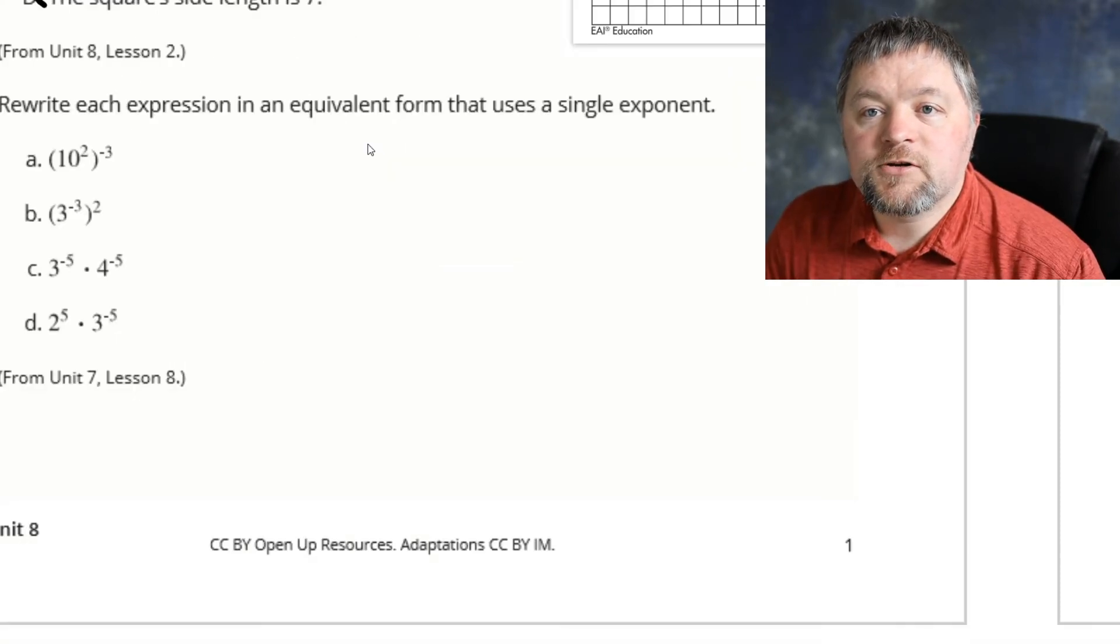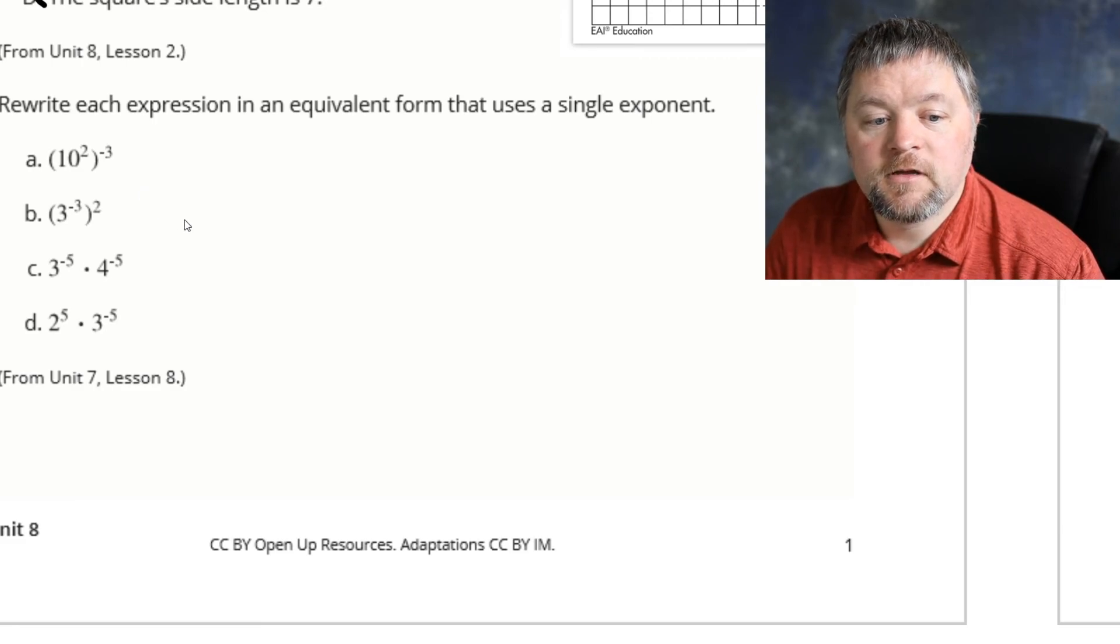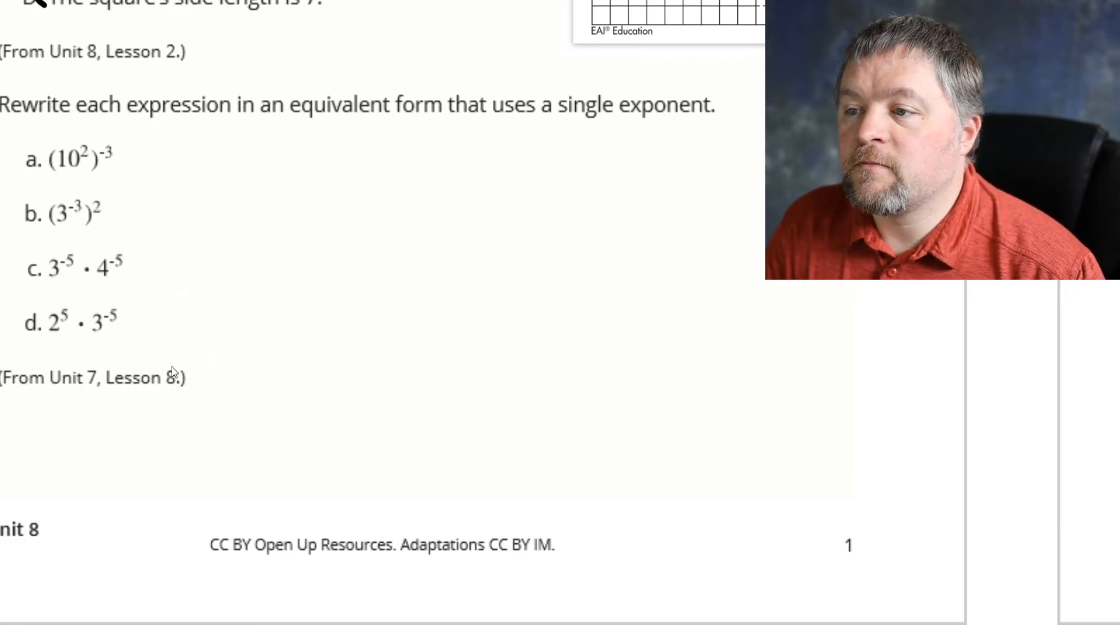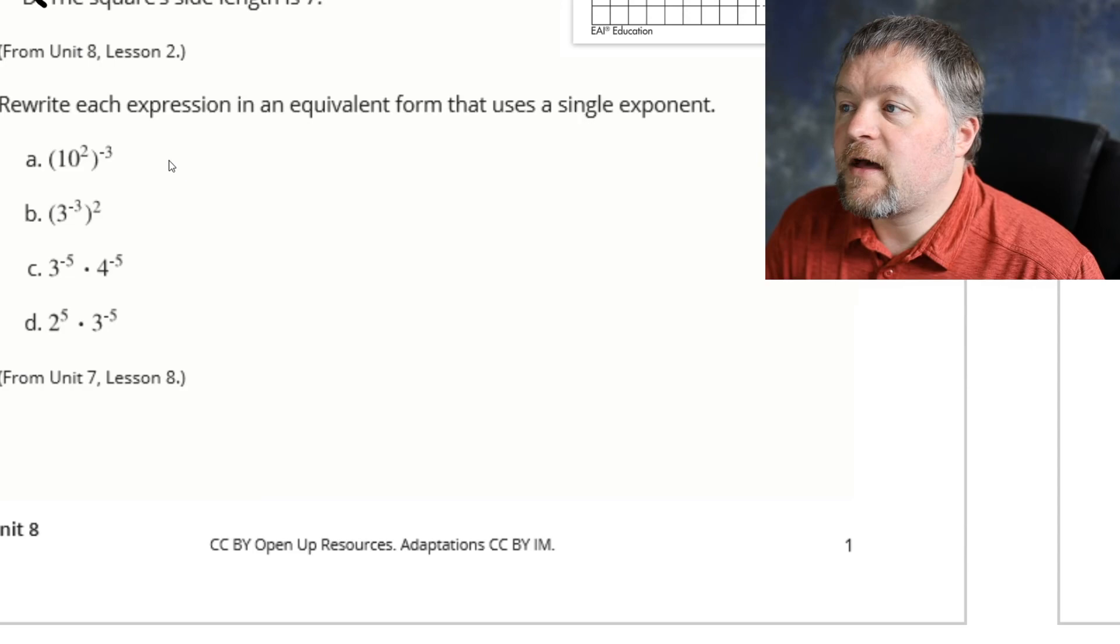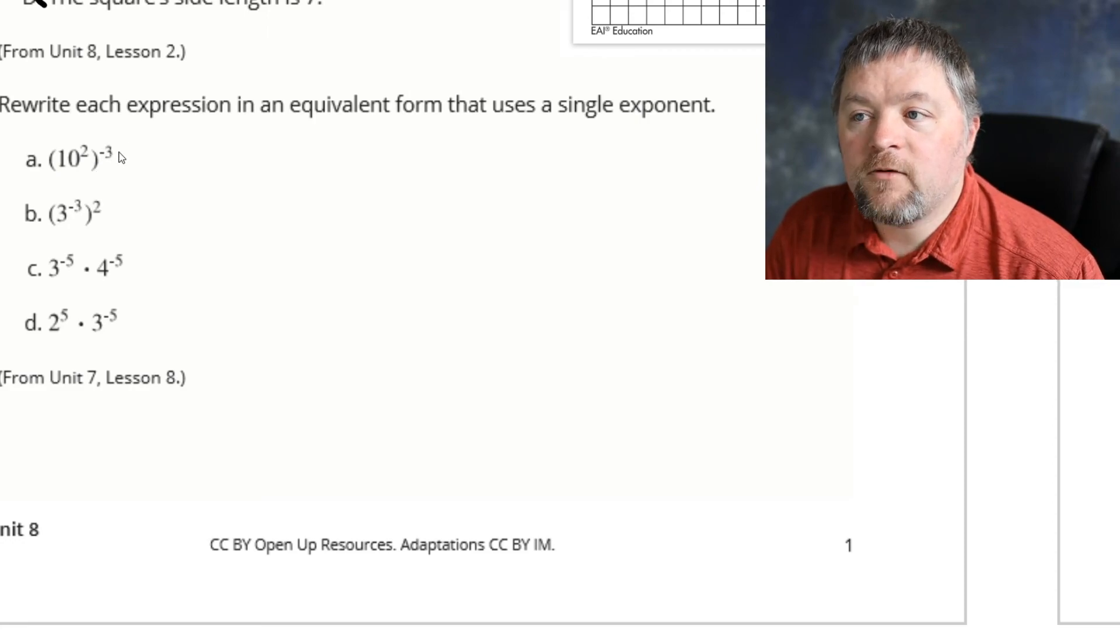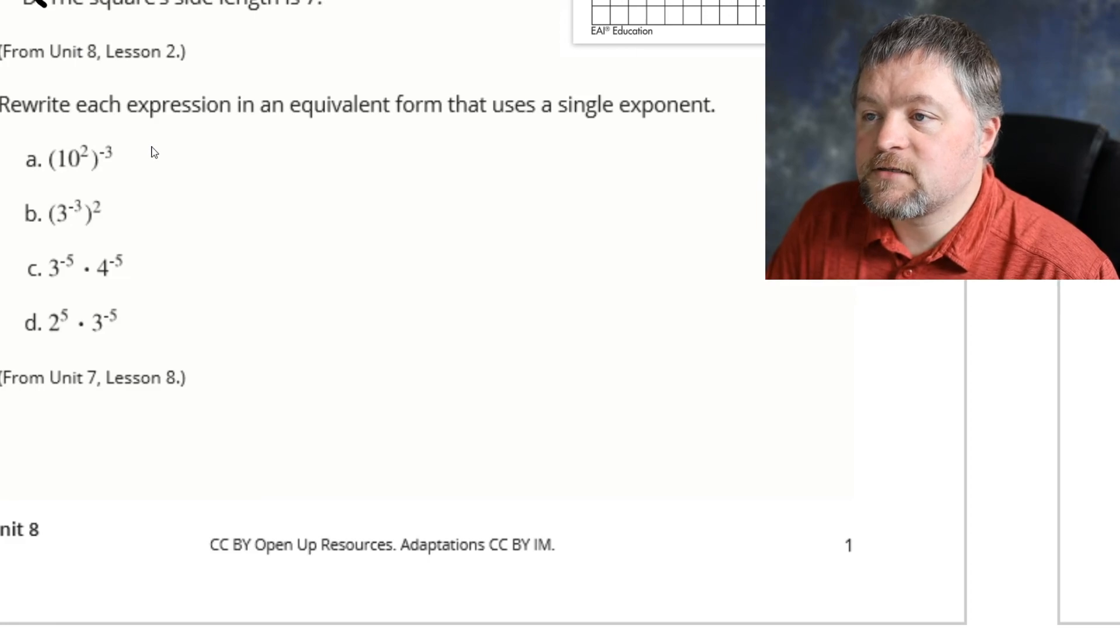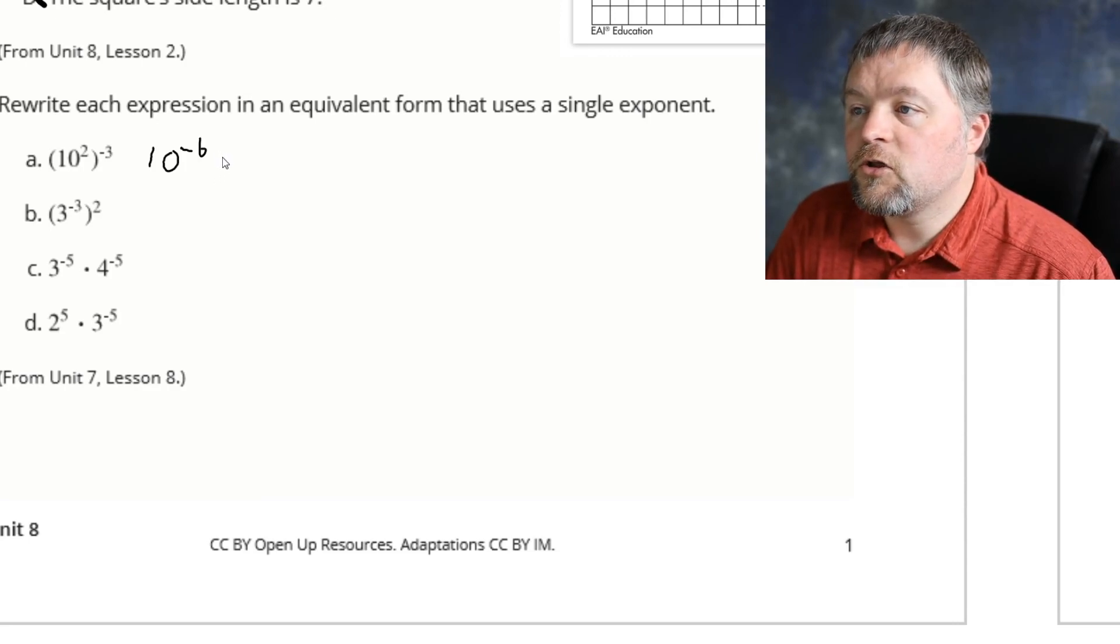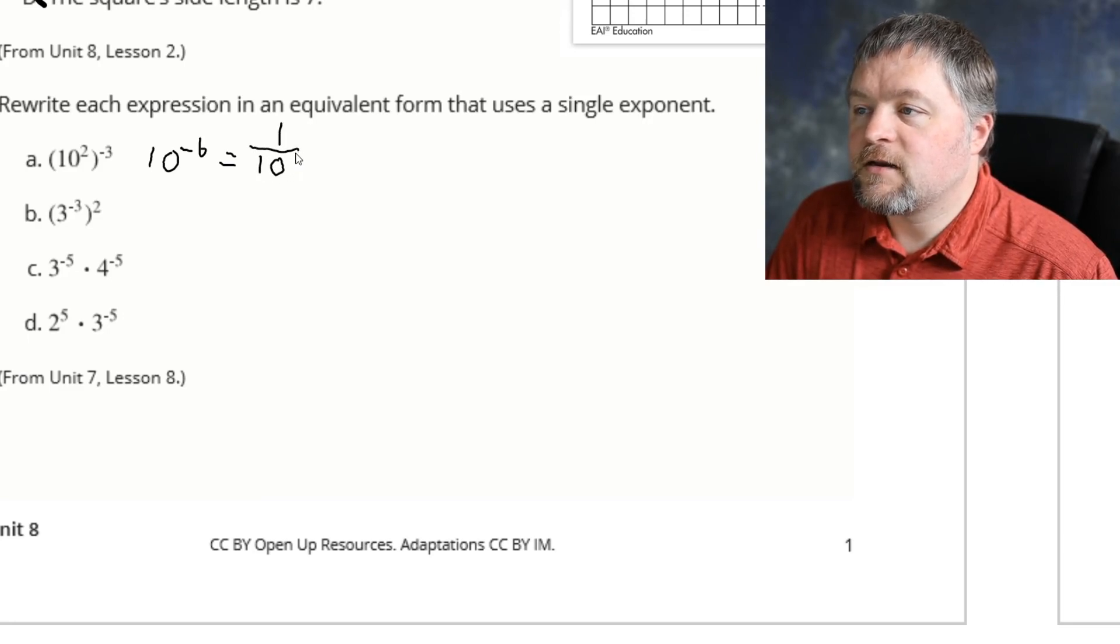Our next question says to rewrite each expression in an equivalent form that uses a single exponent. So this is a review from last unit. We need to use our properties of exponents to find out the value of this using a single exponent. When we have a term raised to a power, we multiply the exponents. 2 times negative 3 is negative 6. So you could write this as 10 to the power of negative 6, or you could write this as 1 over 10 to the power of 6.